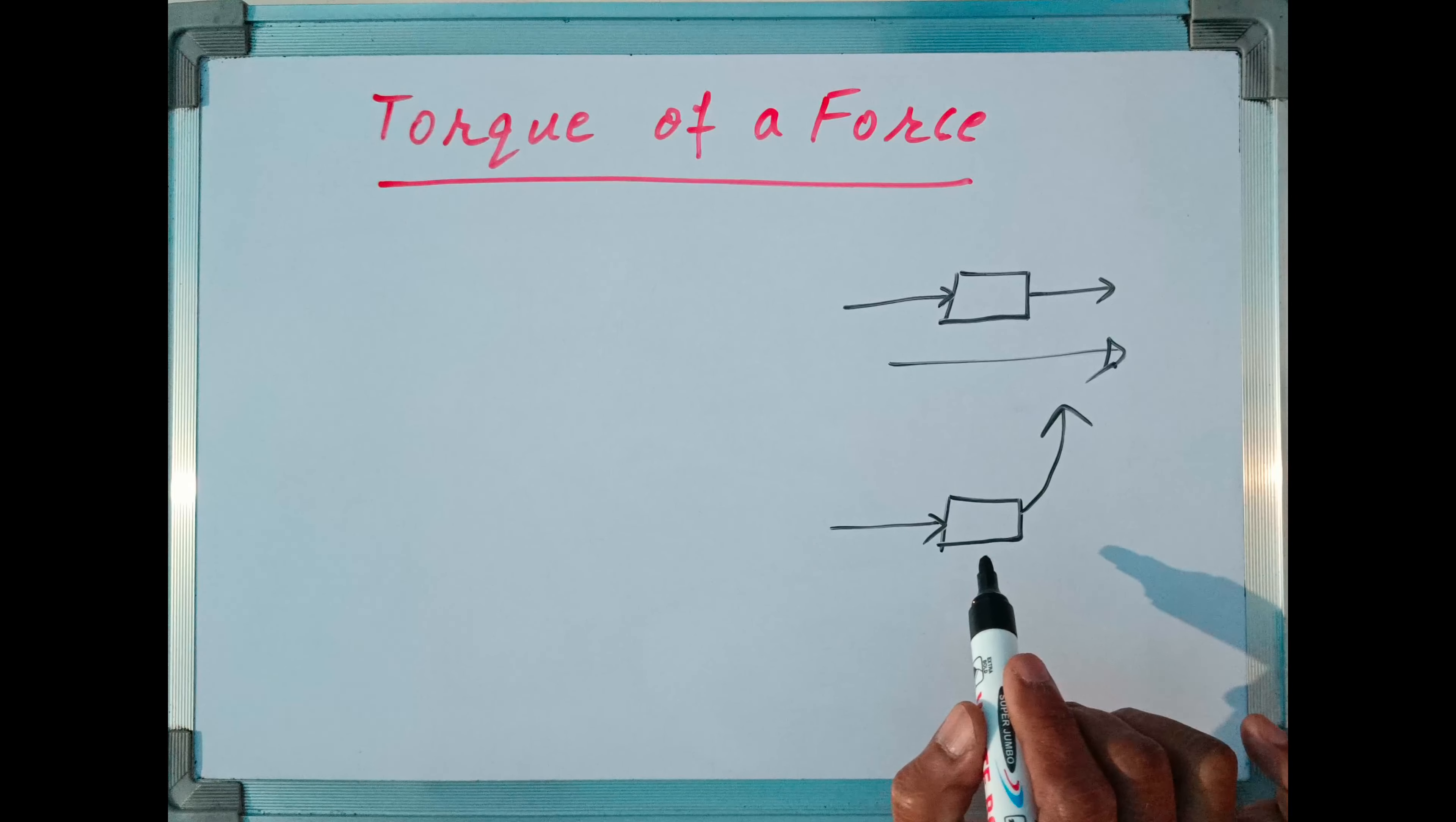If torque is equal to zero, then the body will not rotate. If torque has some non-zero value, then the body will have rotational motion instead of linear motion. Suppose a force vector F is applied on a body and the body starts moving in a circular path around this axis of rotation.